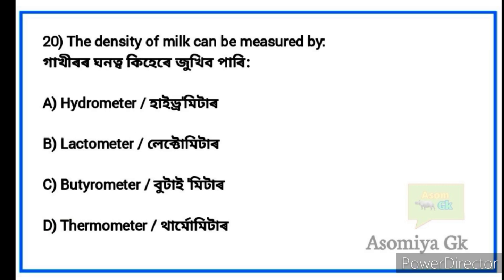Next question: The density of milk can be measured by which instrument? Option B: Lactometer. A lactometer is used to measure the density of milk.